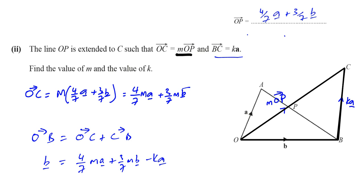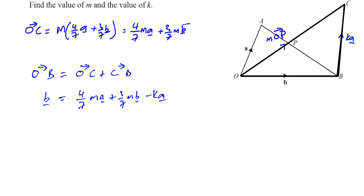So now, we have an equation that links these together. Now, let me just do one thing. Let me just bring the a terms together. So here you've got 4 over 7 m a and minus ka. So I have 4 over 7 m a minus ka. And then I've got the 3 over 7 m b. So one more little step before I continue. I'm going to take out a as common from these two terms. So I'll have 4 over 7 m minus ka plus 3 over 7 times m b.